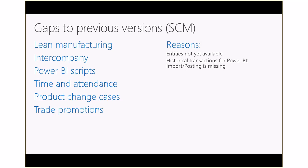There are still some things missing: lean manufacturing, some supply chain scenarios, Power BI not fully populated, time and attendance, project changes, cases, and some trade promotions. We've needed to create some entities — and a good side effect of building demo data is that missing entities get logged as bugs immediately. For Power BI we also need to import into prior periods for sales orders and purchase orders, which we can't do yet.